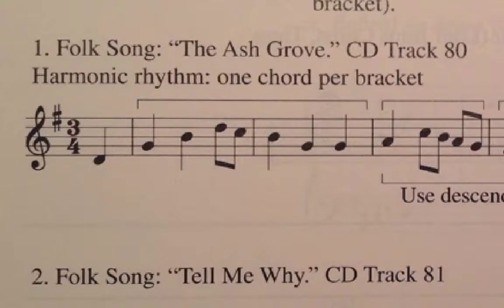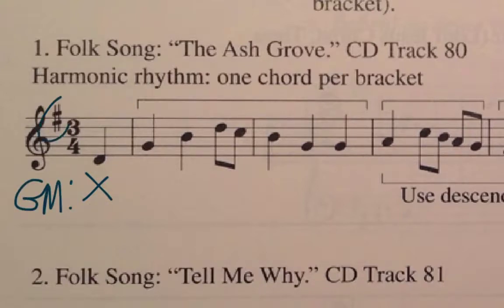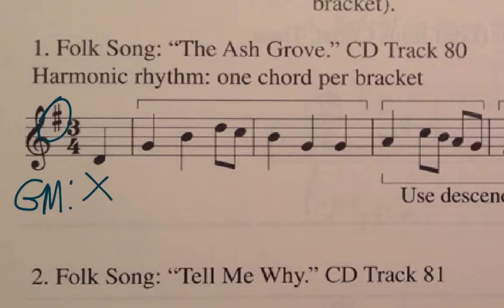Let's take a look at how we might harmonize this melody. There's a pickup, but for right now we're going to skip the pickup and not worry about harmonizing that. Once we get into the first full measure, we are in the key of G major — we have one sharp. The notes in the first measure are G, B, and D, and then there's a passing tone C, so we won't worry about the C. But G, B, and D are clearly a tonic chord.